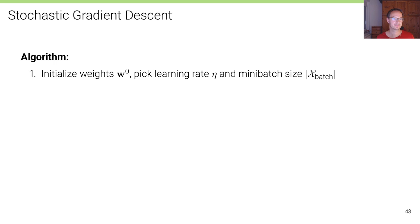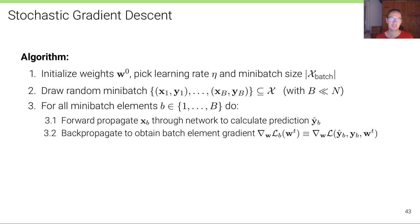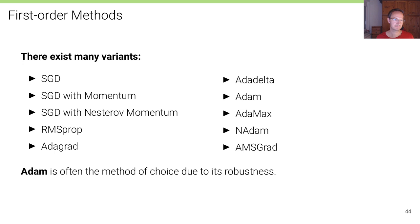Stochastic gradient descent works similarly to full gradient descent but with mini-batches: initialize weights, pick a learning rate and mini-batch size, then randomly draw mini-batches of size B each iteration. For each mini-batch element, forward-propagate to get predictions, backpropagate to get the batch gradient, then update the weights. This is much faster since the inner loop runs over B elements rather than the entire training set. Common variants include SGD with momentum, Nesterov momentum, RMSProp, and Adam — one of the most common today — which combines momentum and gradient scaling.